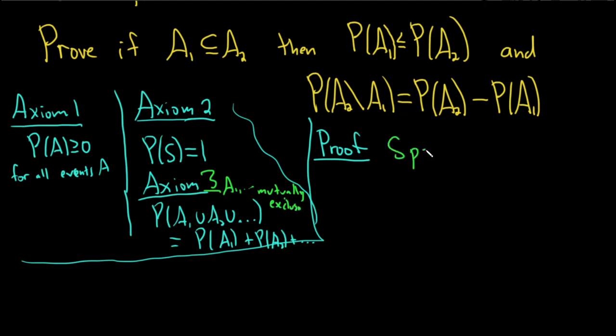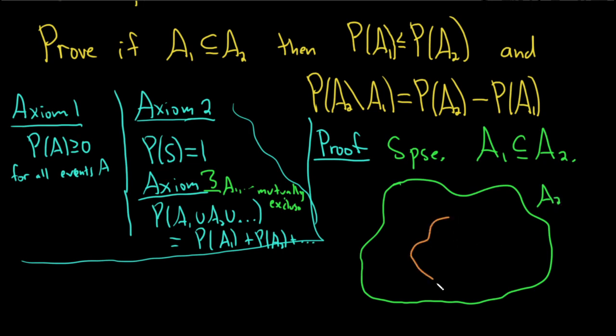So suppose, let's assume our hypothesis: A sub 1 is a subset of A sub 2. So because that's the case, check this out. I think we can break up A sub 2. So let's say that this is A sub 2, and then A sub 1 is a subset, so it's going to be here. This is A sub 1.